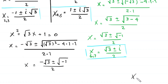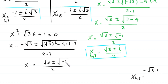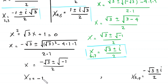This gives x equals negative root 3 plus or minus i, divided by 2. These are the 8th and 9th values of x.